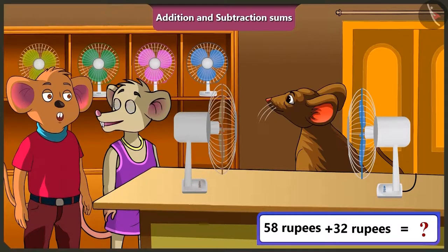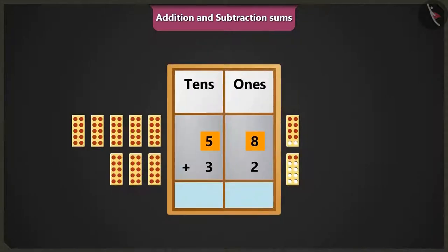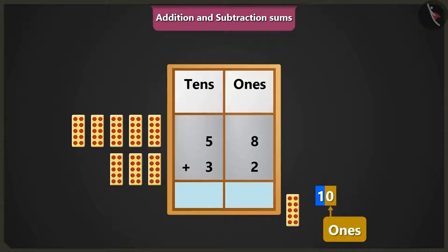To know that, we would have to do the addition of 58 and 32 after putting them in the box of ones and tens. Yes. So now if we will add numbers 8 and 2 of the box of ones unit, then after 8, there will be 9 and 10. There are 0 ones and 1 ten in 10.